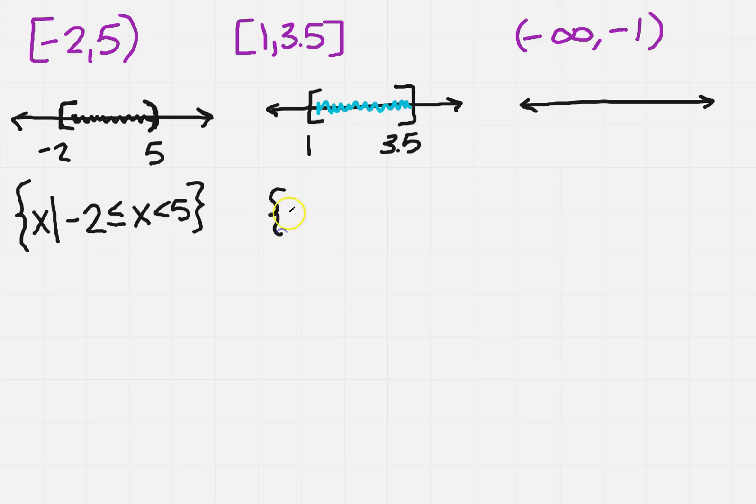So to do set builder, you'd have x such that. The number on the left is 1. It's a bracket, so that means it's less than or equal to x. It's also a bracket on the right, so it's going to be less than or equal to 3.5.